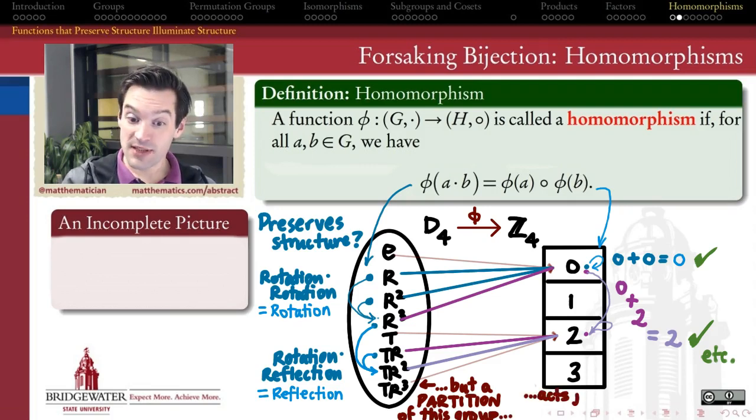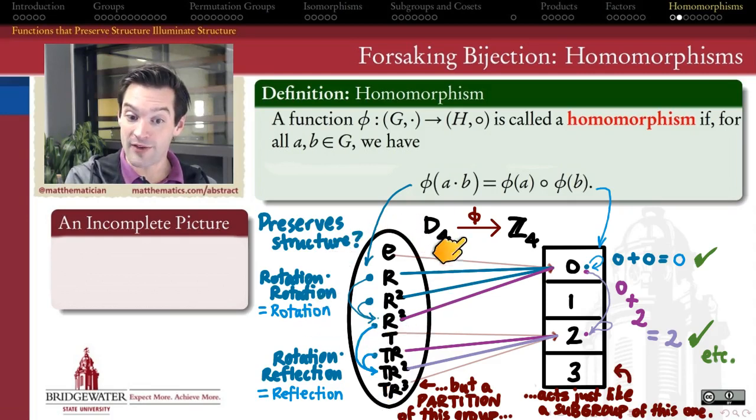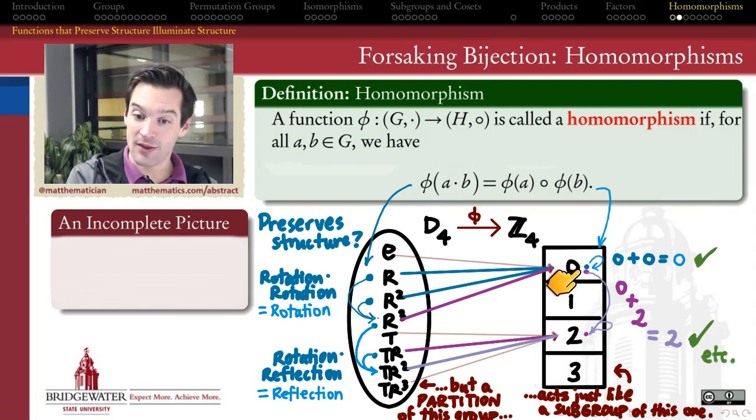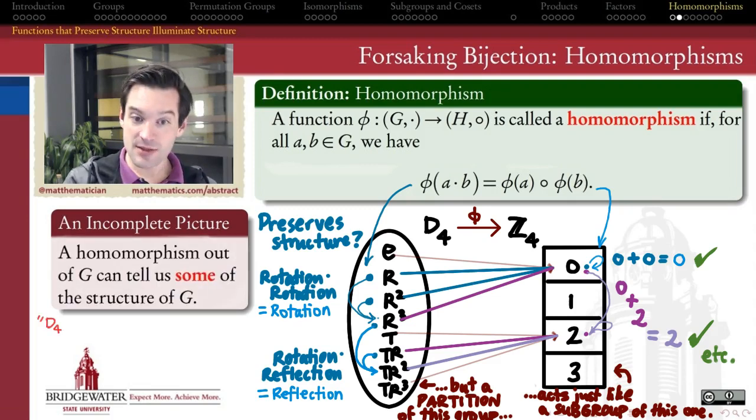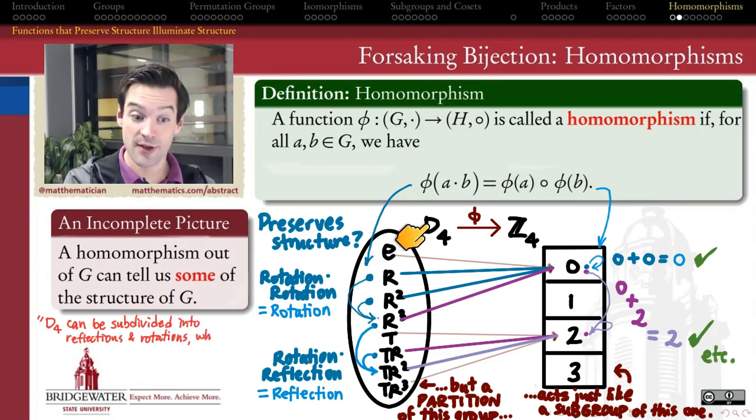This function was capable of partitioning the group D4 into a subset of elements which all have enough similarity with one another that they can be grouped together and all get sent to 0—those are my rotations. And then the other set in that partition is all the reflections which have enough in common that we can give them all the same image of 2 under this structure-preserving function. That partition of D4 into two pieces, the reflections and the rotations, acts a lot like the subgroup of the numbers 0 and 2 in Z4, which is the image of this function. That is the sense in which this homomorphism has given me a partial picture, an incomplete picture of the structure of the dihedral group of the square.